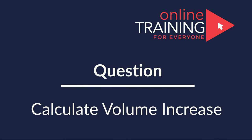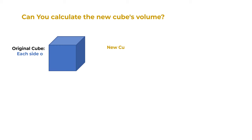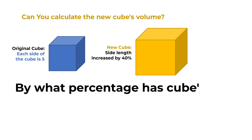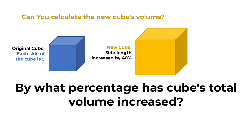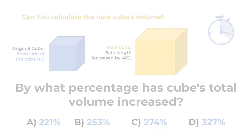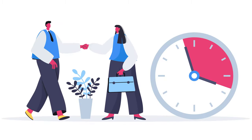Here's an interesting question from the real test. An original 5×5×5 blue cube has its side length increased by 40%, represented by a yellow cube. By what percentage has the total cube volume increased? Choices: A) 221%, B) 253%, C) 274%, and D) 327%. The answer may not be obvious, so give yourself a little time.